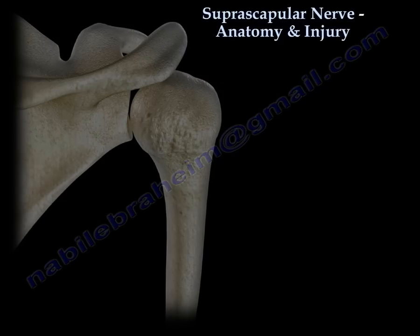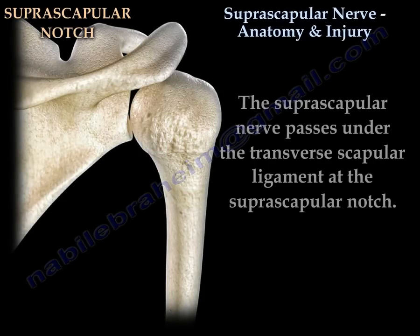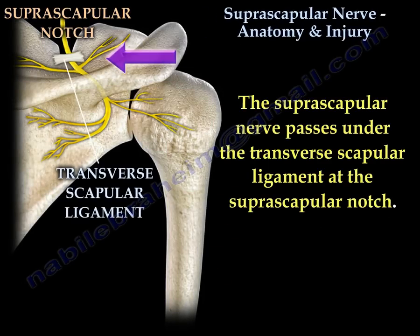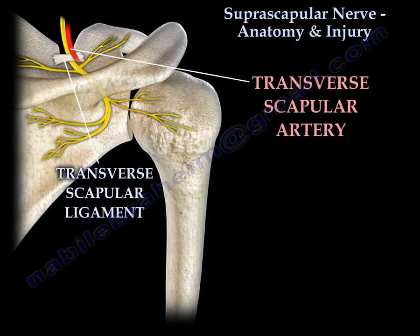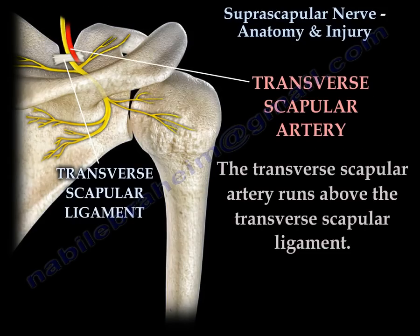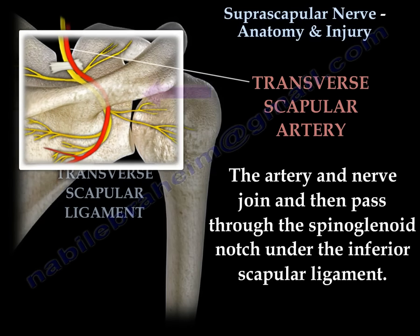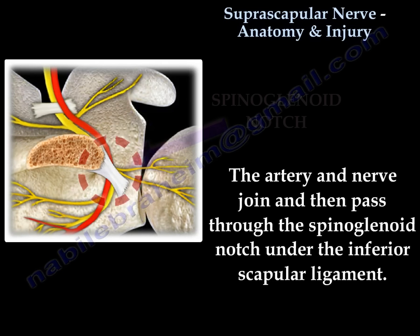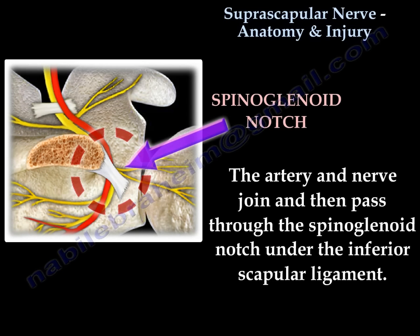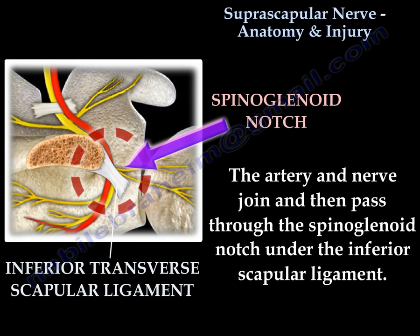The suprascapular nerve passes under the transverse scapular ligament at the suprascapular notch. The transverse scapular artery runs above the ligament. The artery and nerve then join and pass through the spinoglenoid notch under the inferior scapular ligament.